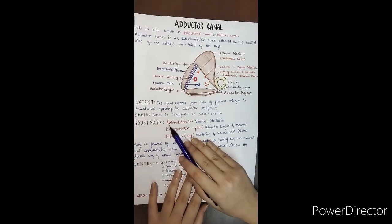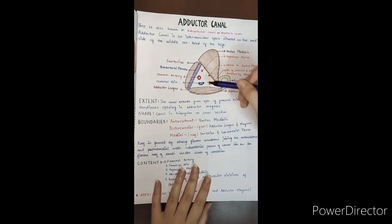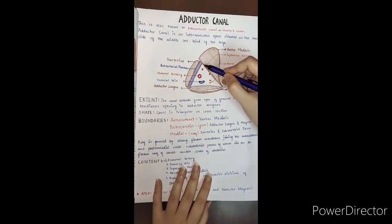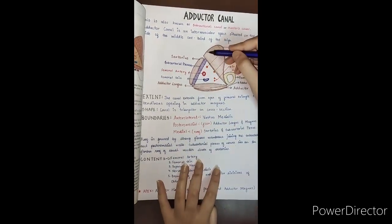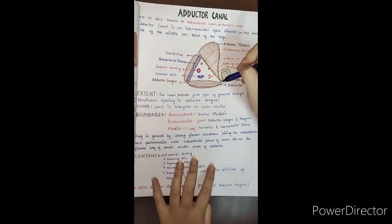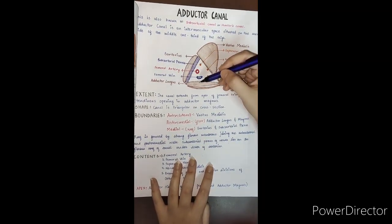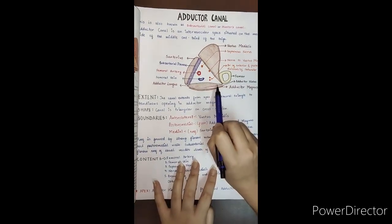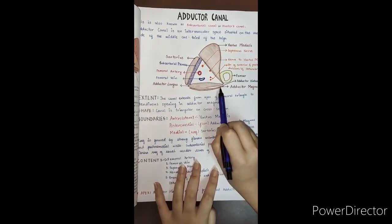If you see this shape and cross-section it, this canal is triangular shaped. The boundaries: the anterolateral side is the vastus medialis, and the posteromedial side is the adductor longus and adductor magnus.